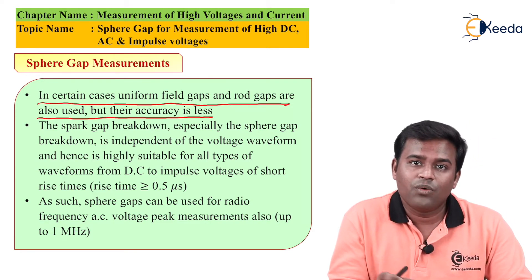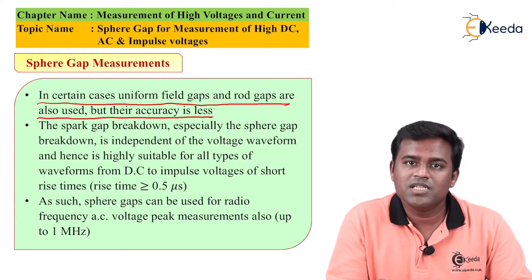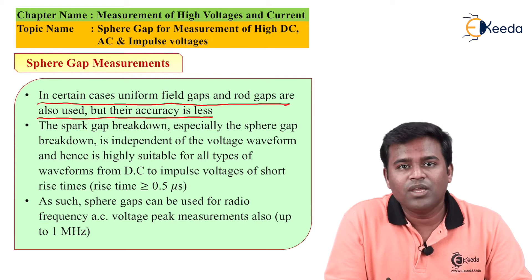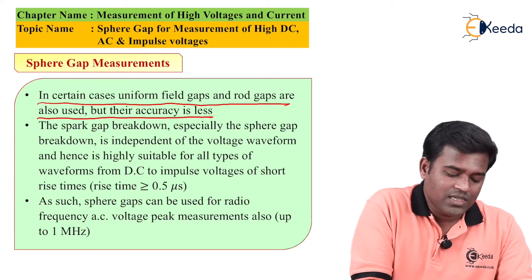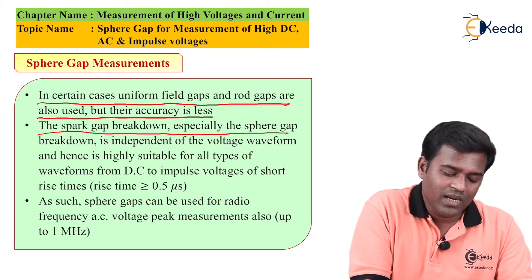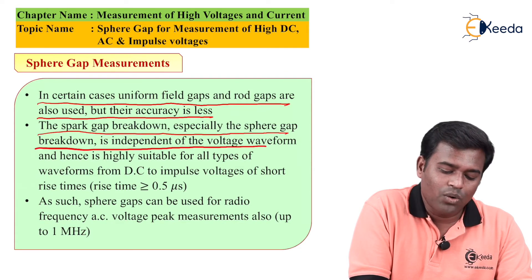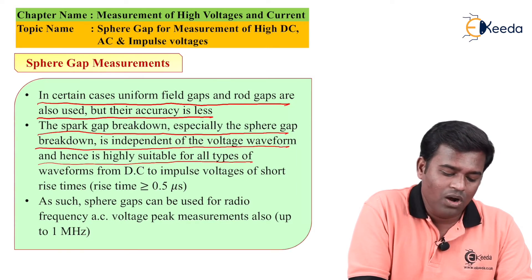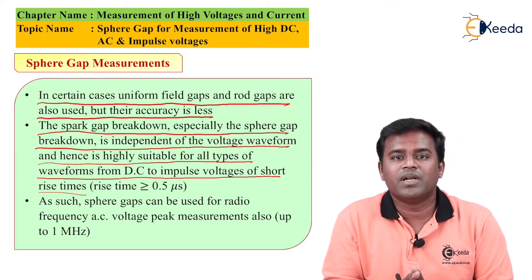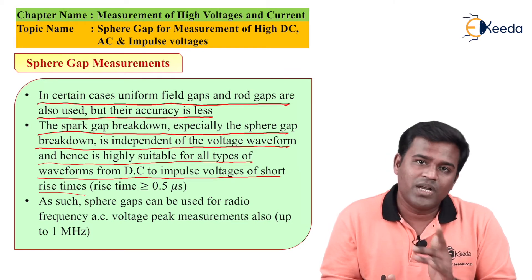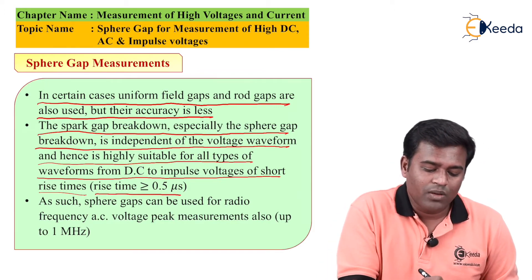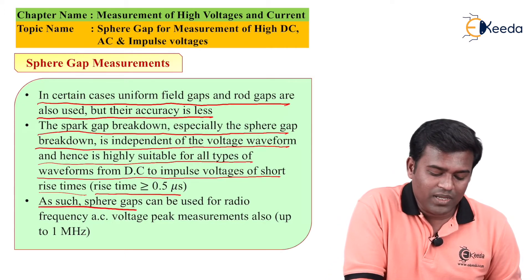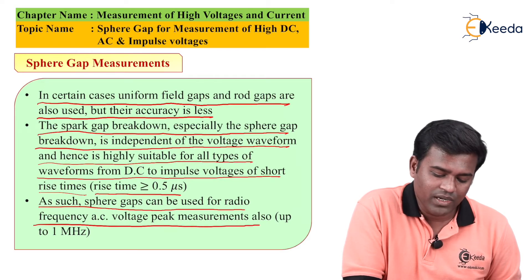When rod gaps and uniform field gaps are used in Sphere Gap measurement, the accuracy of peak voltage measurement is reduced. The Sphere Gap breakdown is independent of the voltage waveform, and hence is highly suitable for all types of waveforms from DC to impulse voltages with short rise times greater than 0.5 microseconds. As such, Sphere Gaps can also be used for radio frequency AC voltage peak measurement.